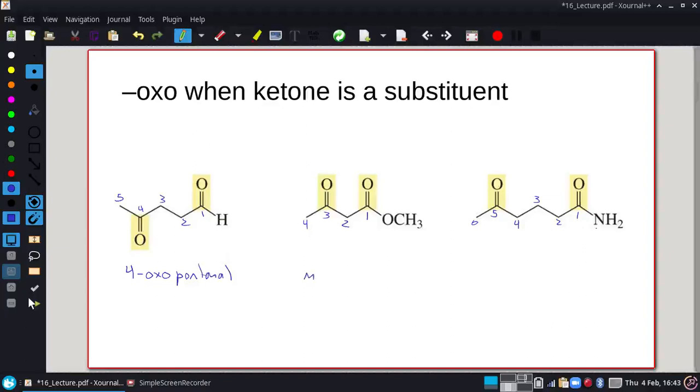So this is 4-oxo-pentanol. This is 2-oxo-pentanol. This is methyl because of that. And then 3-oxo-butanoate and 5-oxo-hexanamide.